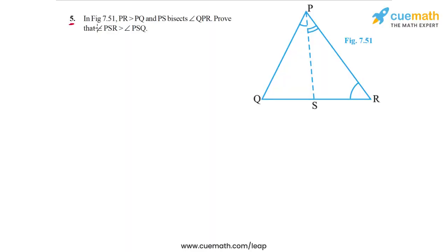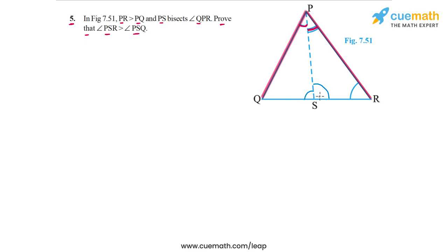In question 5 of the exercise, the problem statement says: in figure 7.51, PR is greater than PQ — let's highlight these two sides. PS bisects angle QPR, so PS is the angle bisector of angle QPR, making these two angles equal. We have to prove that angle PSR is greater than angle PSQ.